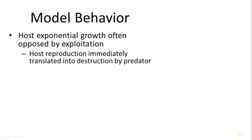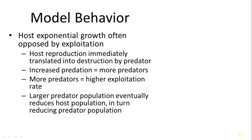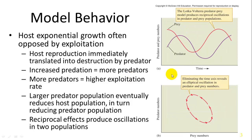When modeled over time, exponential growth by the host is opposed by exploitation. Host reproduction translates into destruction by a predator, which increases predation and thus more predators. More predators means a higher exploitation rate. A larger predator population eventually reduces the host population, which in turn reduces the predator population. This creates a reciprocal effect: more predators reduce prey, fewer prey reduce predators, fewer predators allow prey to increase again — a continuous cycle.